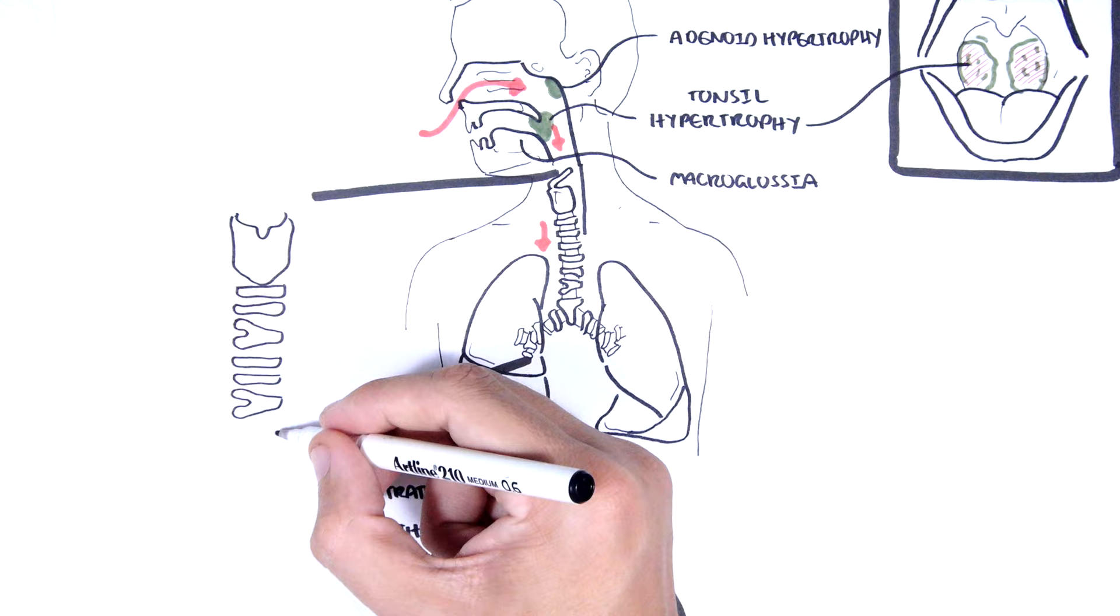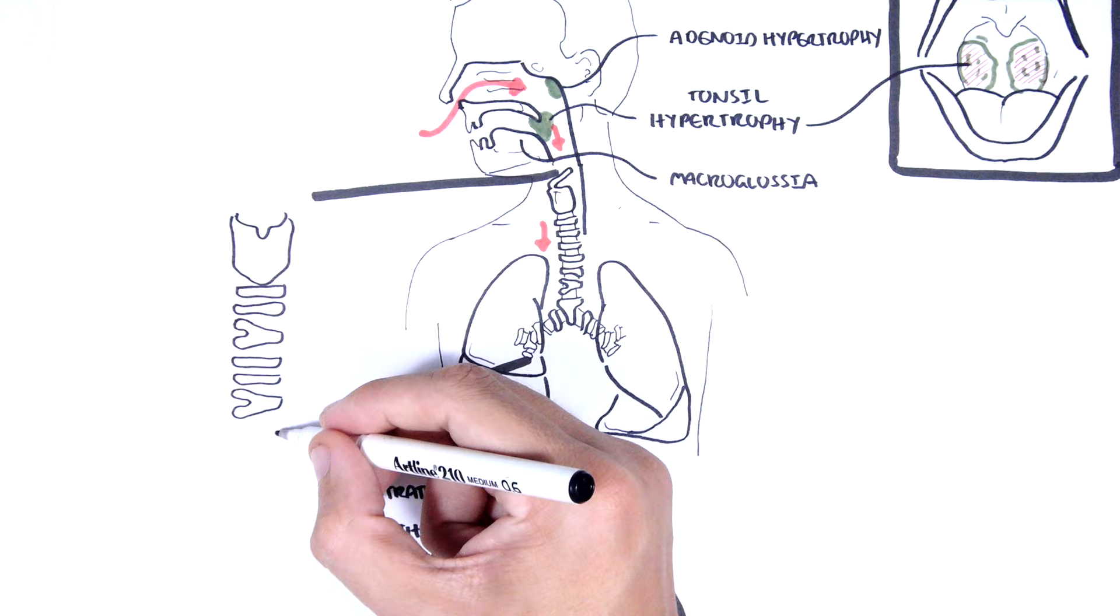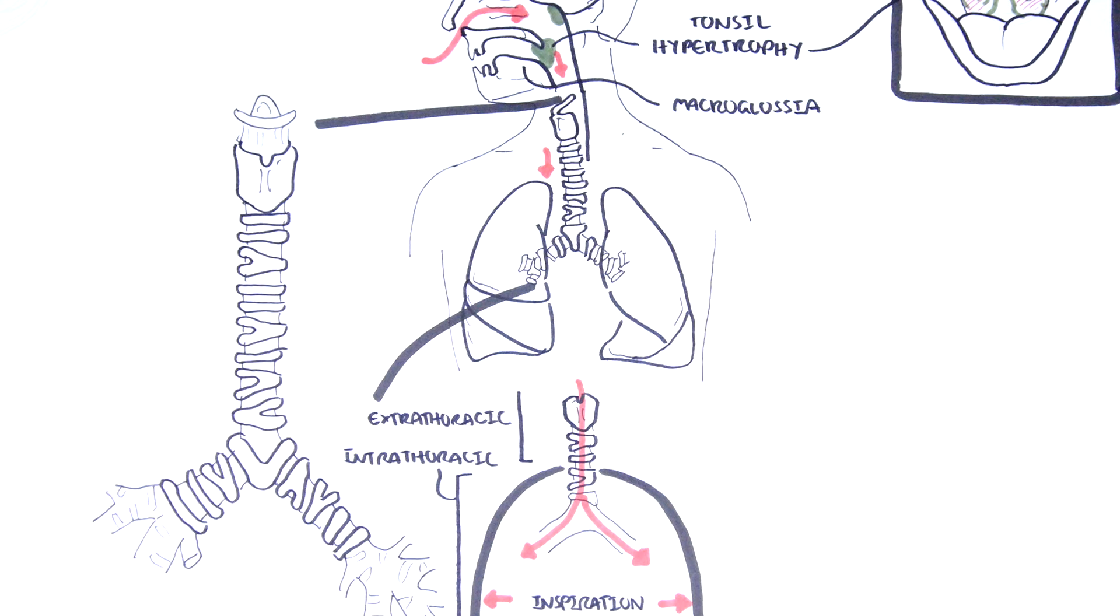Moving down the respiratory tract, focusing on the laryngopharynx, the larynx and the trachea, these structures are still within the extrathoracic region, and so will cause an inspiratory stridor if partially obstructed.